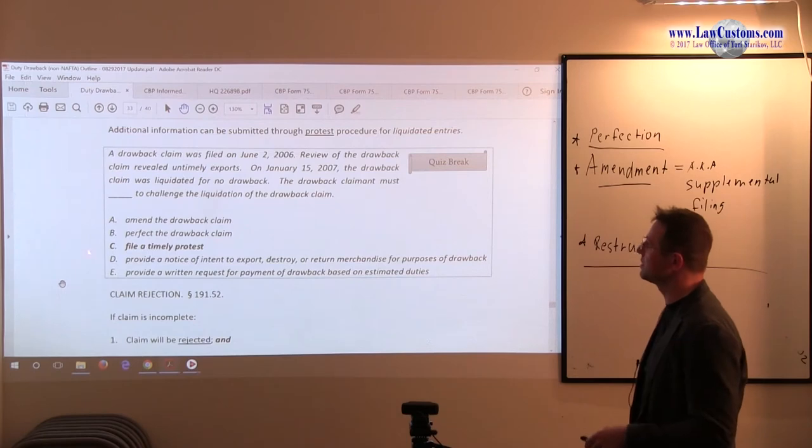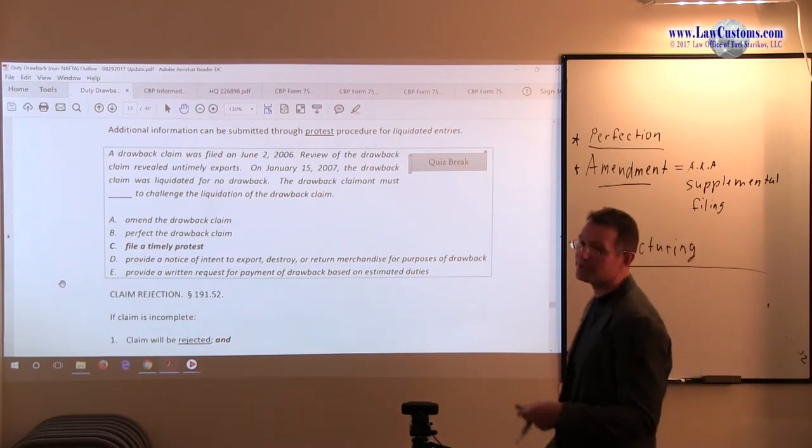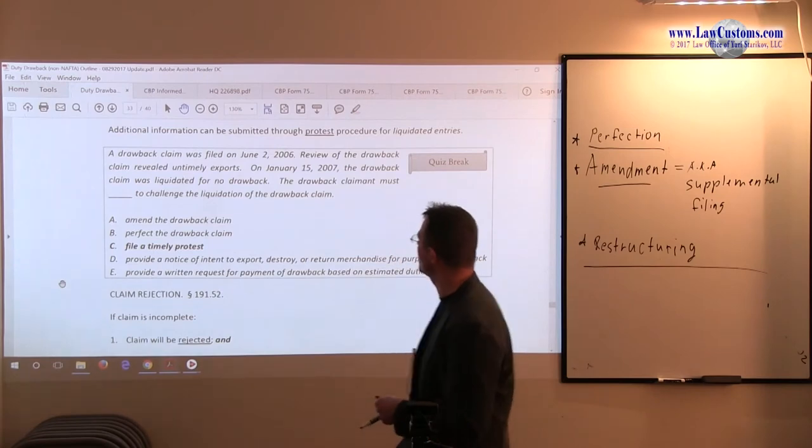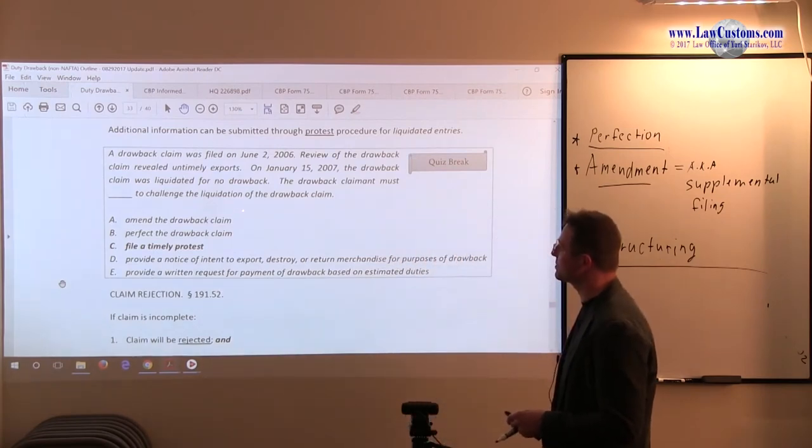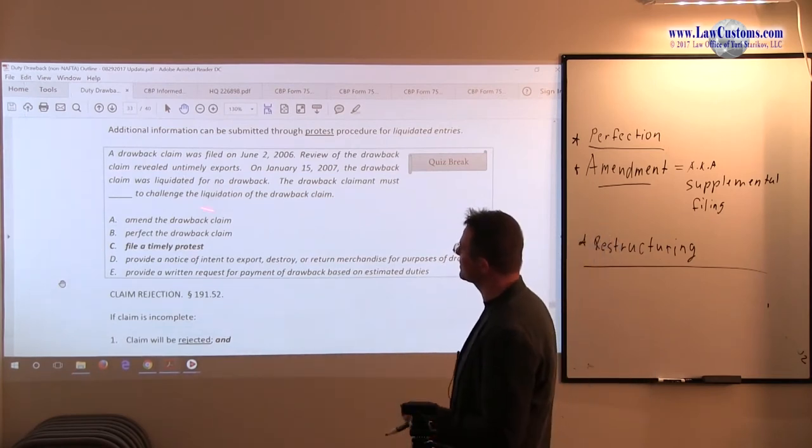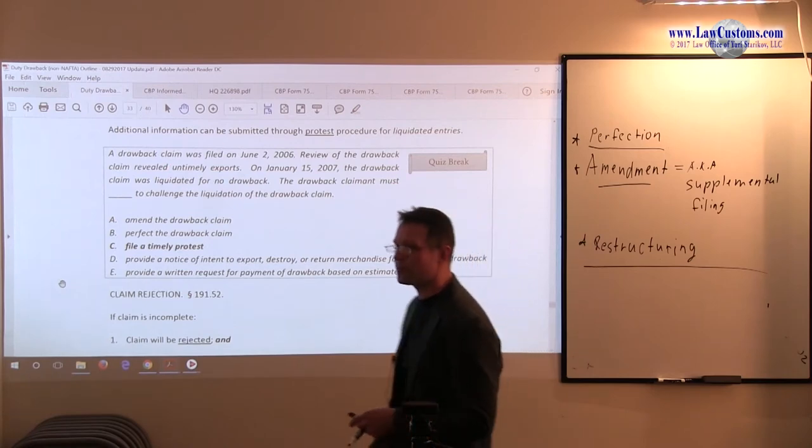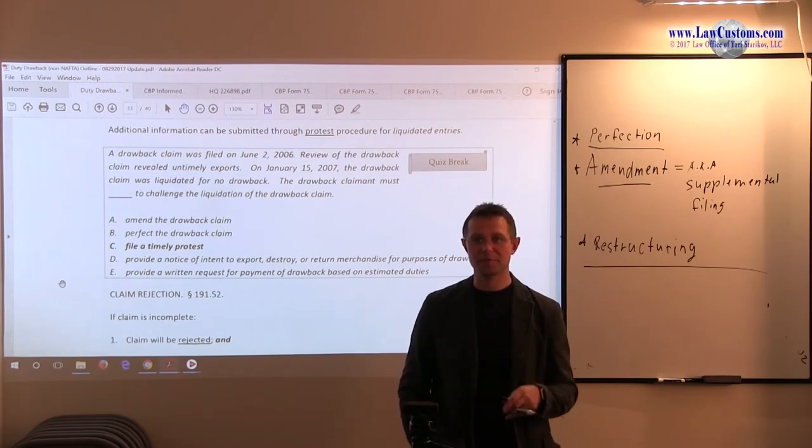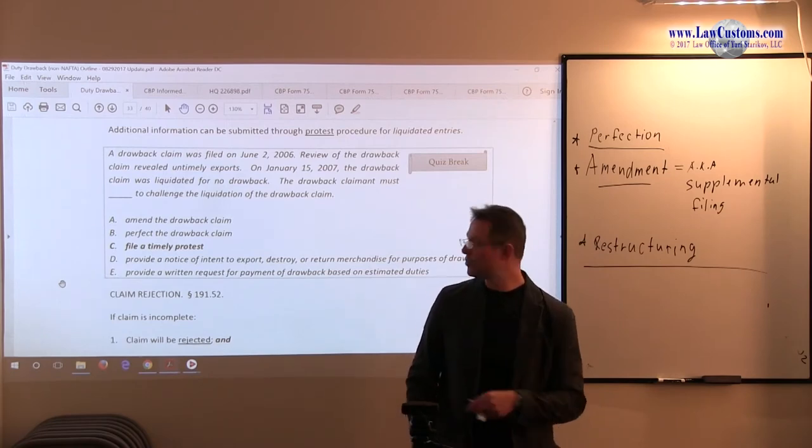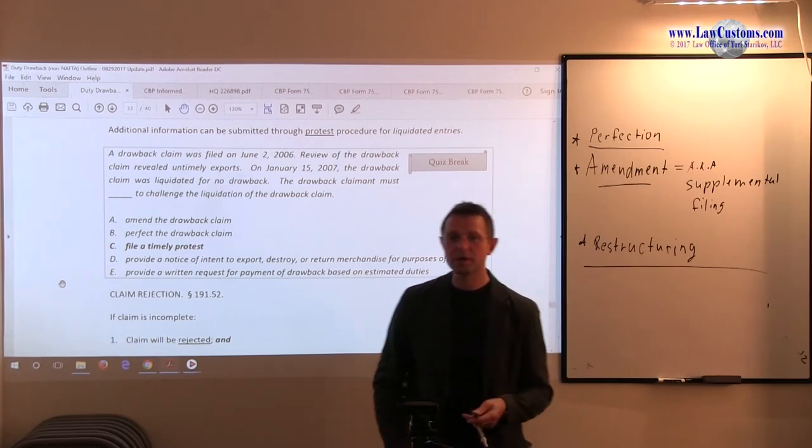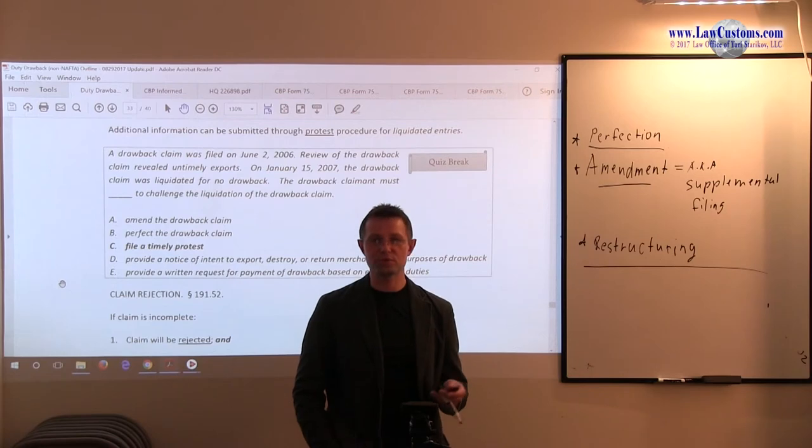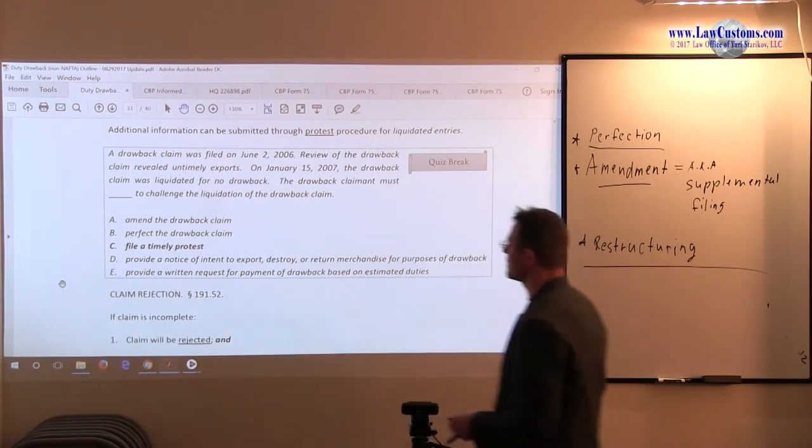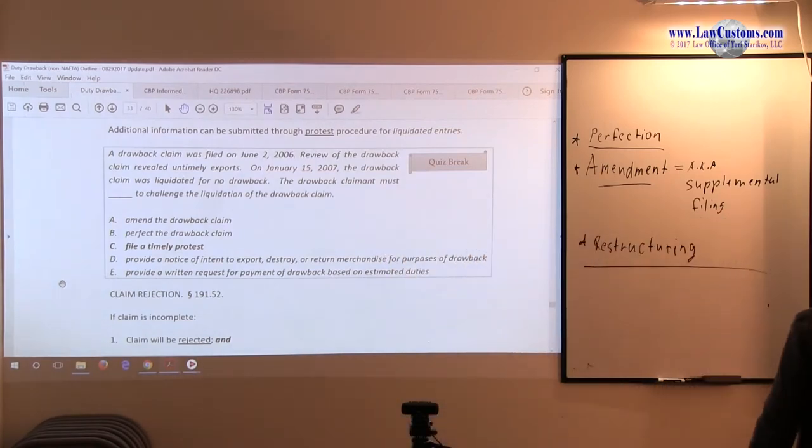E. Provide a written request for payment of drawback based on estimated duties. Well, that request was part of the drawback file in 7551. It's already liquidated, so the written request was already done. It makes no sense to pick this answer because it is not responsive to the question asked. So the correct answer is the drawback claimant must file a timely protest to challenge the liquidation. C here is the correct answer choice.